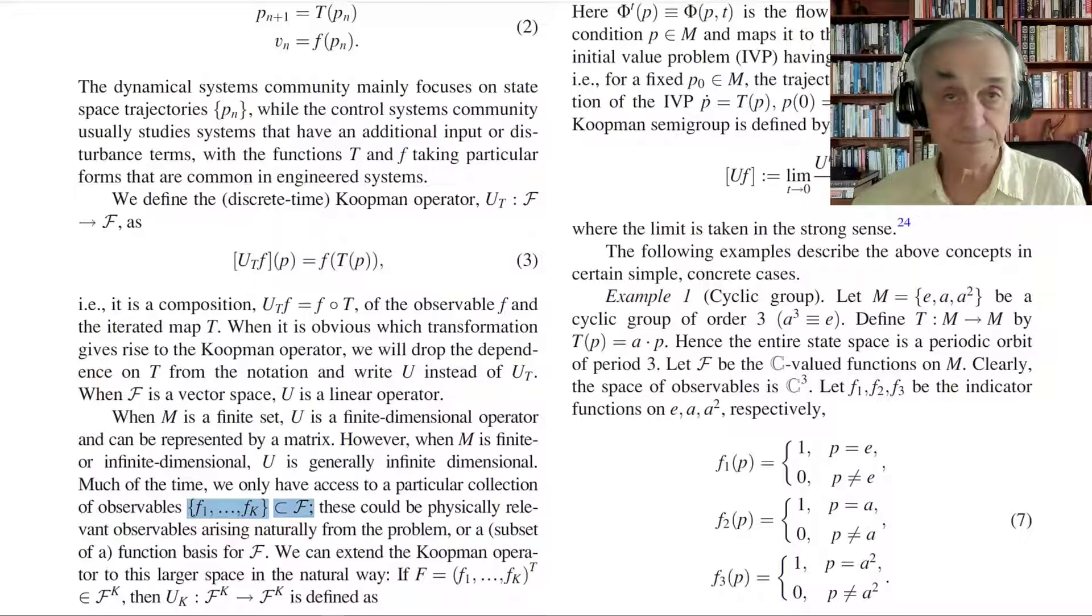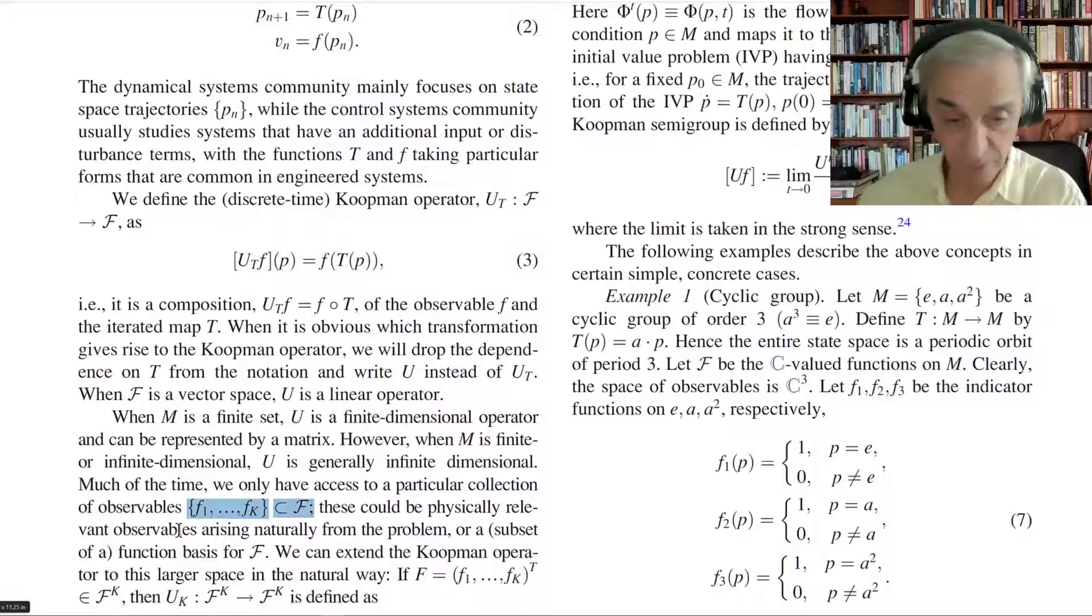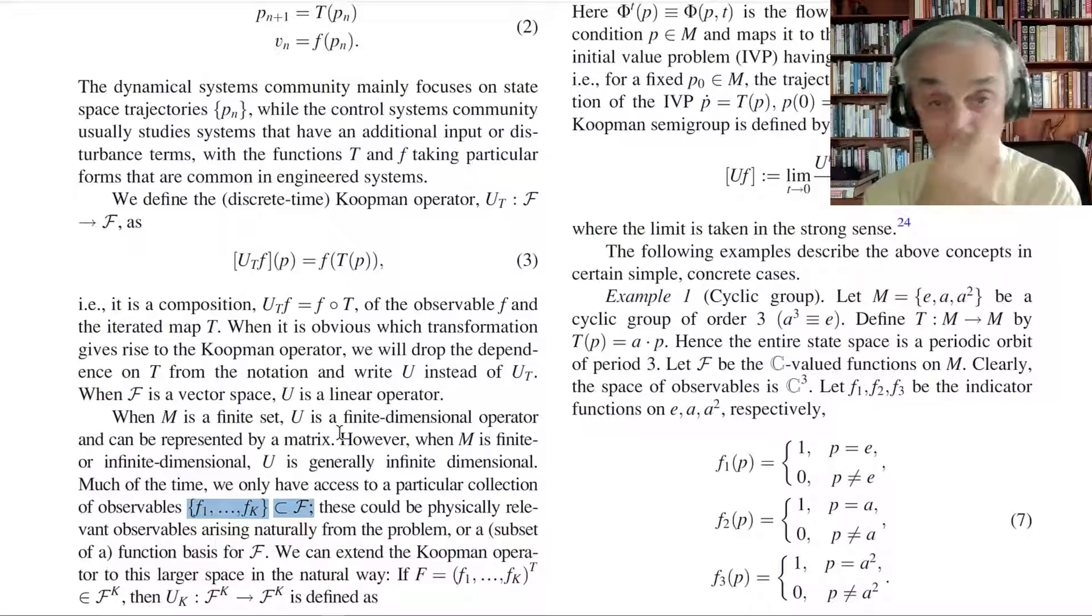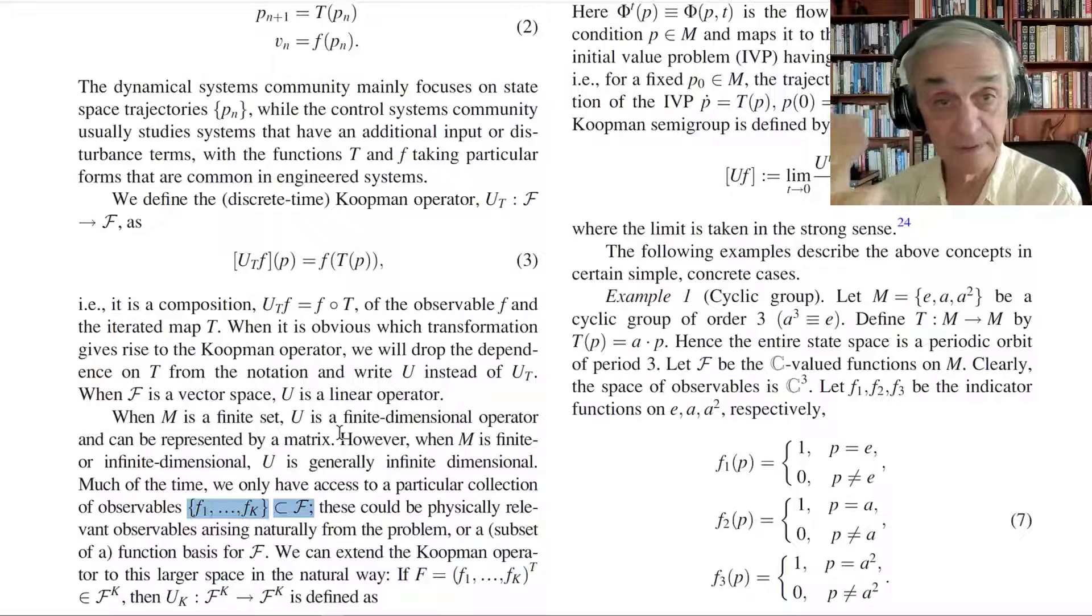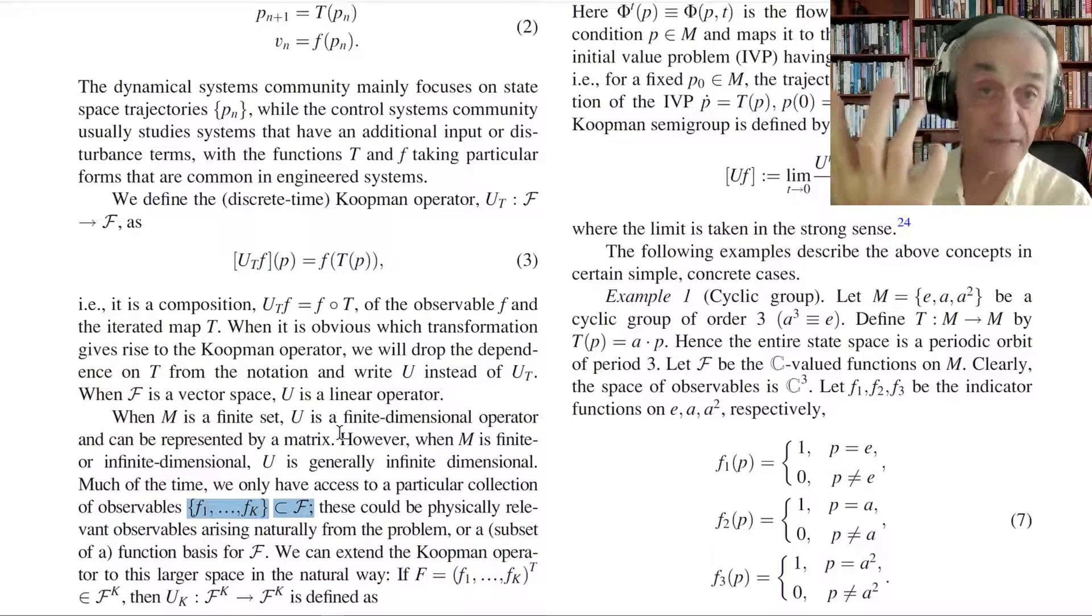So now, what Mezić and maybe people before him, but I'm understanding you best when he explains it, says, no, if you have sufficiently many observables, you actually might have all the information about theory that you need. If you measure sufficiently many things. Now, why do they think that? Why does Mezić think about it?